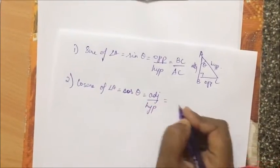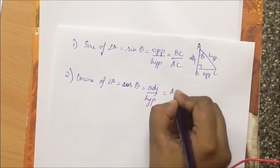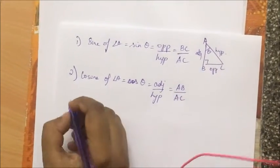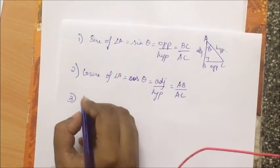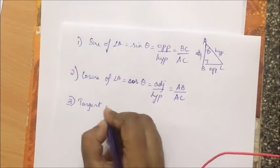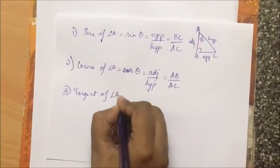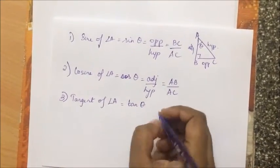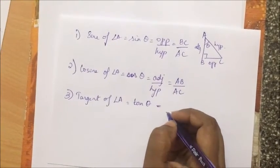over hypotenuse, where my adjacent is AB and the hypotenuse, as we already know, is AC. The third ratio is called the tangent of angle A. The short form is tan theta.